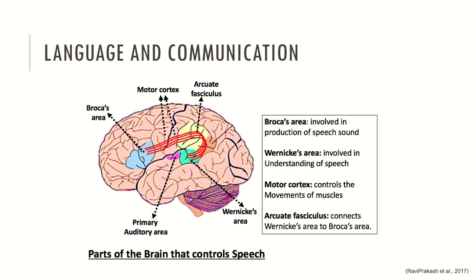Now let's take a brief look at the neuroanatomical structures of language. Several areas are typically described as the neuronal basis for language and communication. Broca's area, which is involved in the production of speech. Wernicke's area, which is involved in understanding speech. The motor cortex, which is responsible for controlling the movements of muscles. And the arcuate fasciculus, which connects Wernicke's area to Broca's area. These areas are connected with each other and are typically described as the main areas responsible for language and communication.